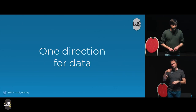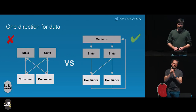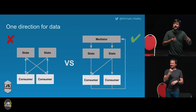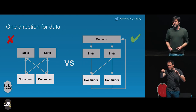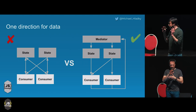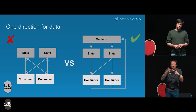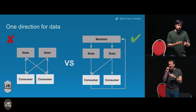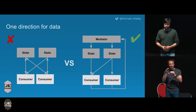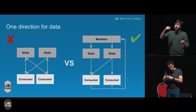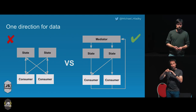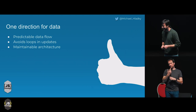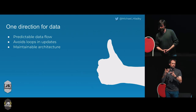Next principle: one direction for data. On the left side you see something I implemented many times when I started with front-end development — every part of your application communicating with any other part. It's very easy to introduce a total mess: unmaintainable, full of bugs you won't find. What I really recommend is introducing one-way data flow. You can do this with a tiny code snippet — a mediator — responsible for forwarding all your commands to specific state parts or services. Those services communicate the update to your consumers, who can again only communicate back through this mediator. This gives you predictable data flow, prevents loops, and is vital for maintaining your application.